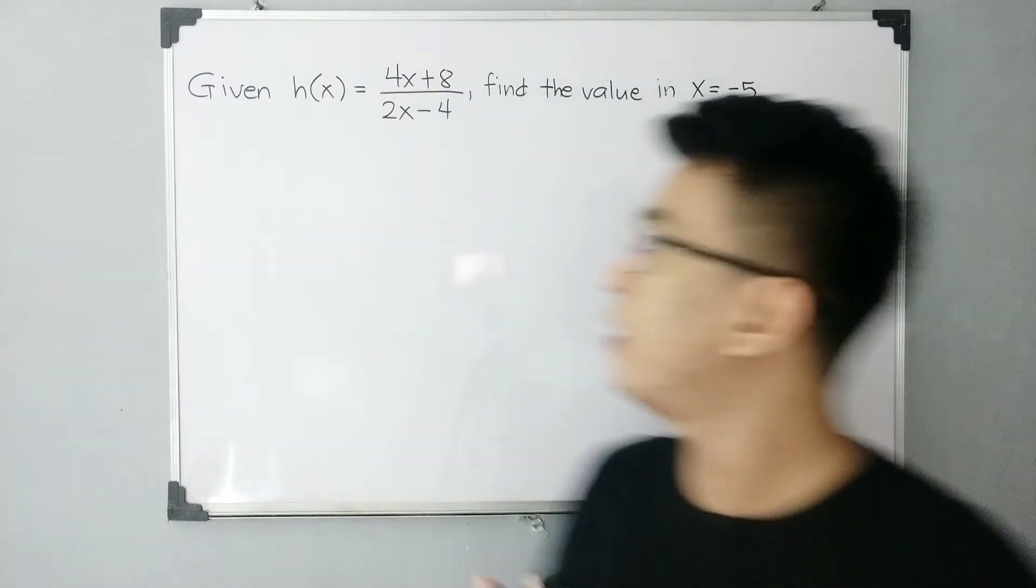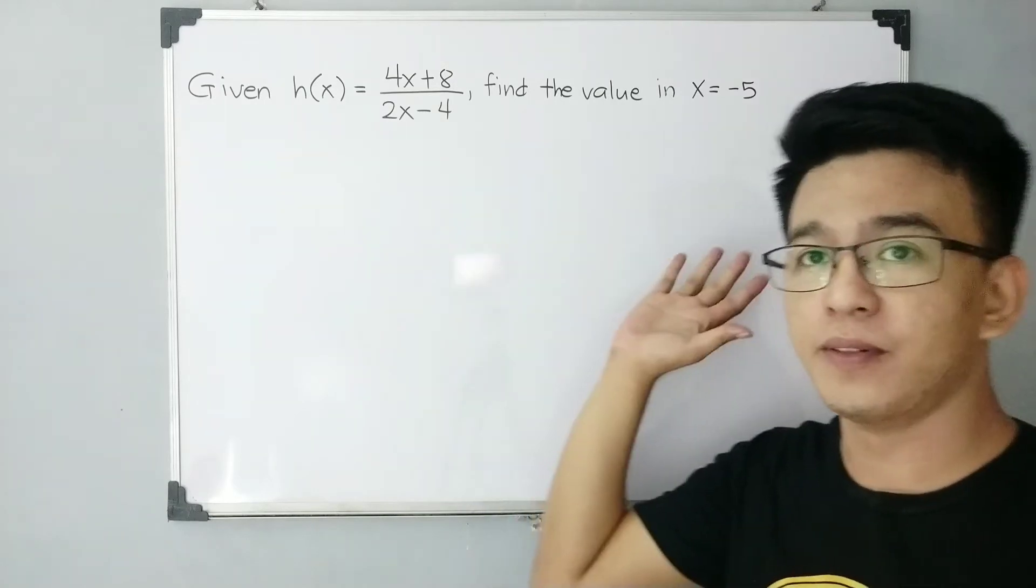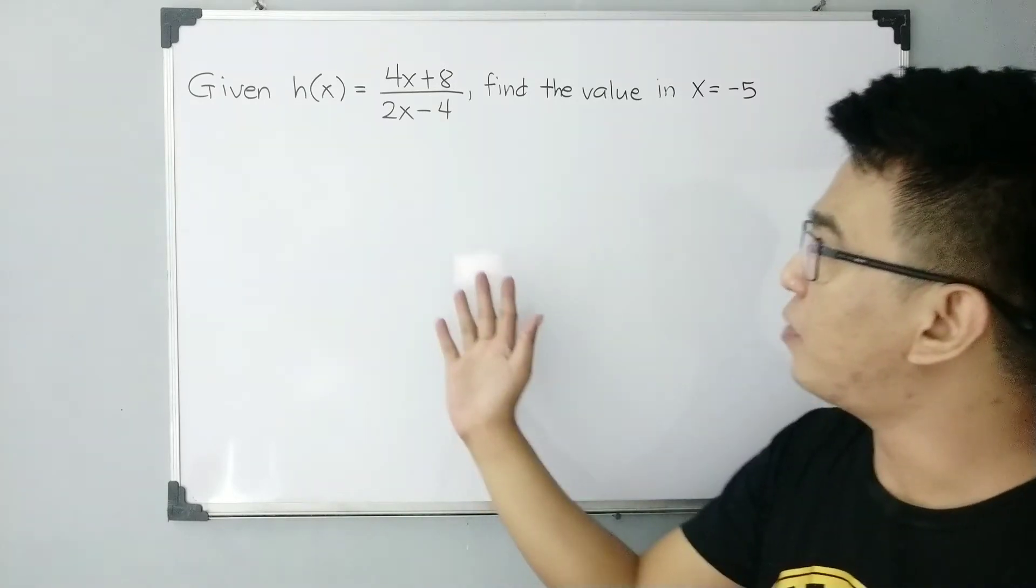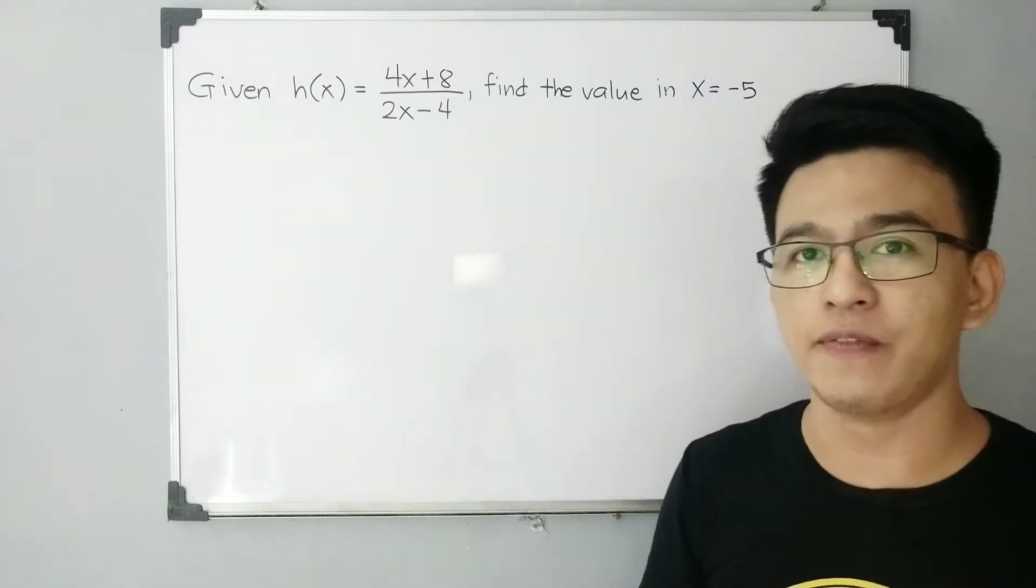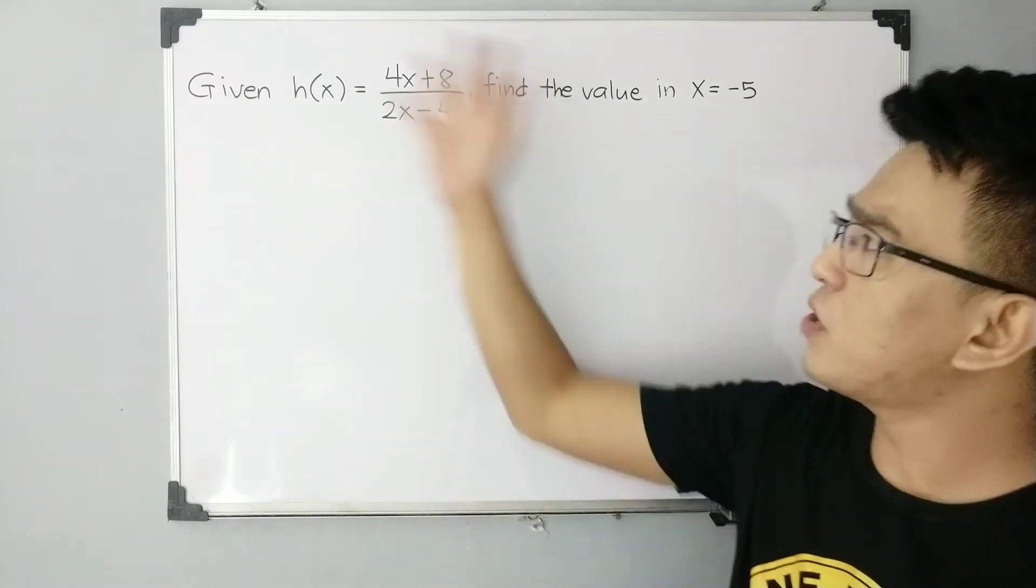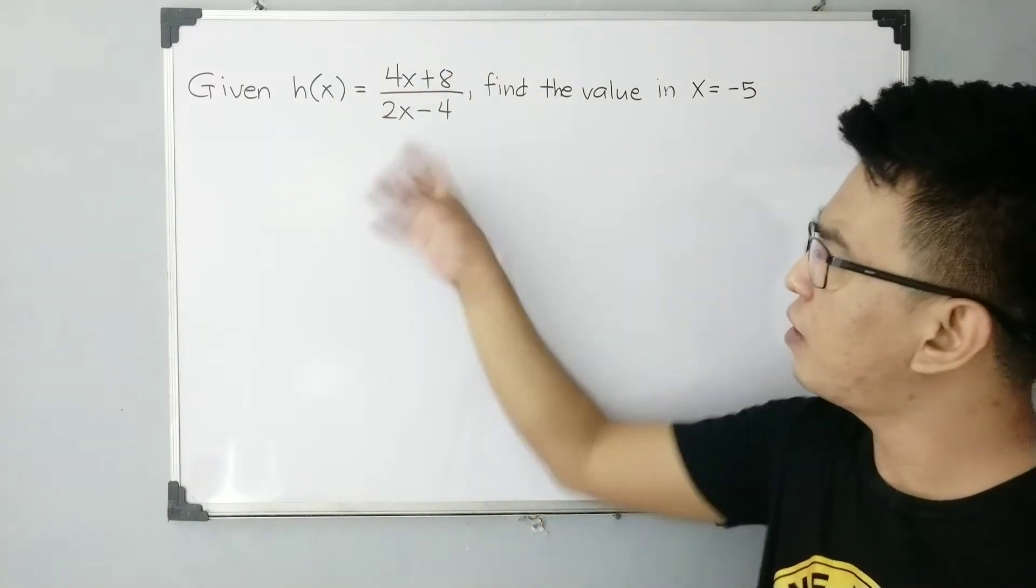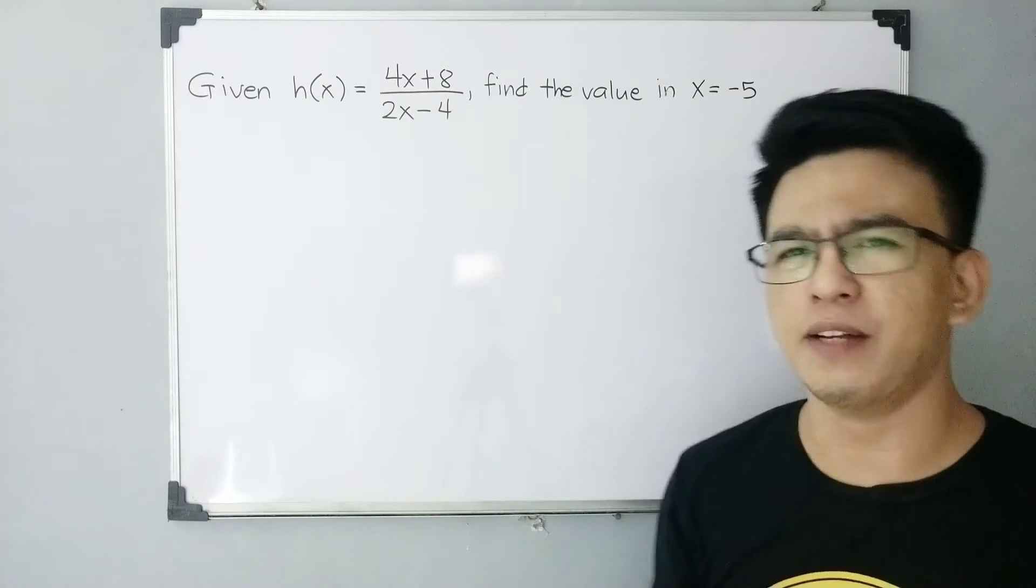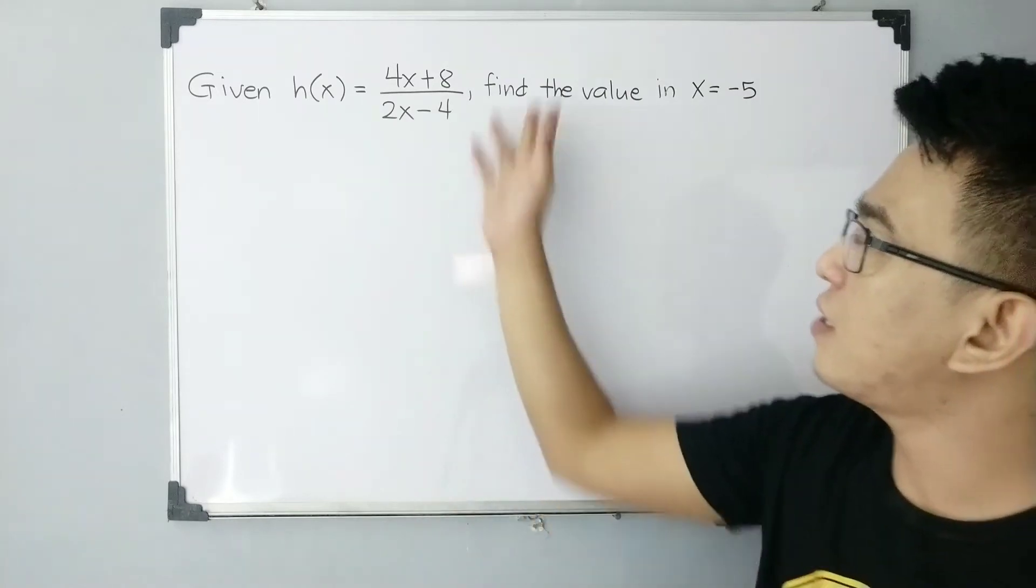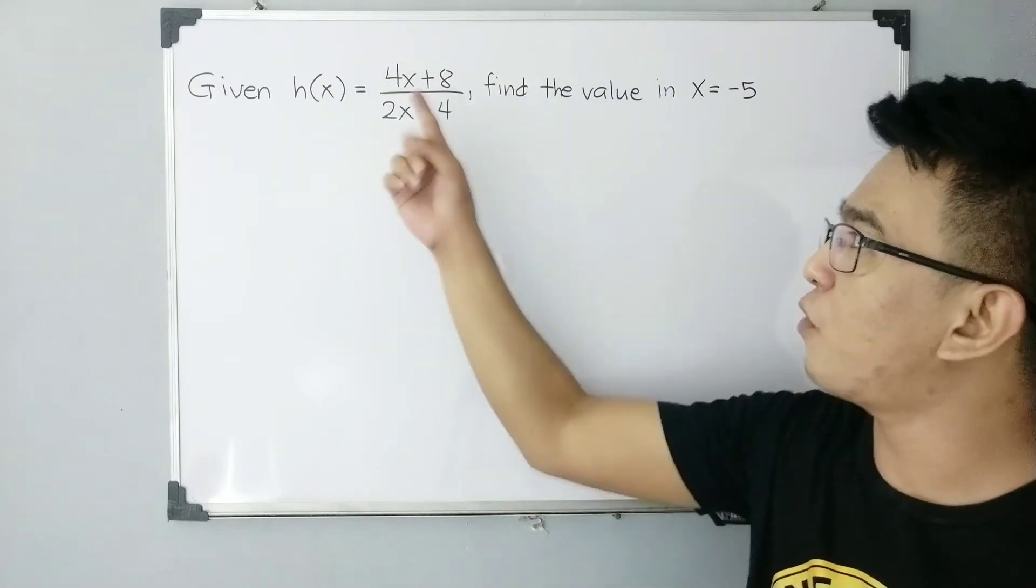And to be specific, this is our given example, our single example for us to know how to evaluate functions. Because most of the students are afraid, they find it kind of difficult if the given function has this kind of expression which is 4x plus 8 over 2x minus 4.